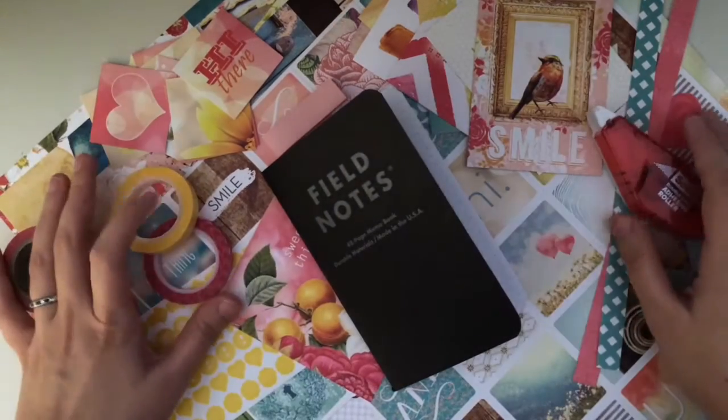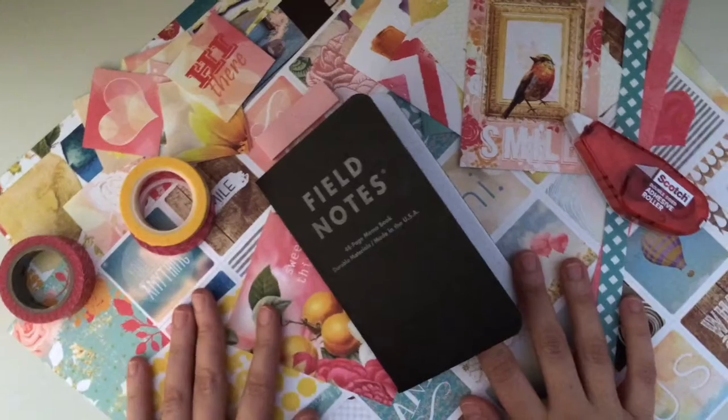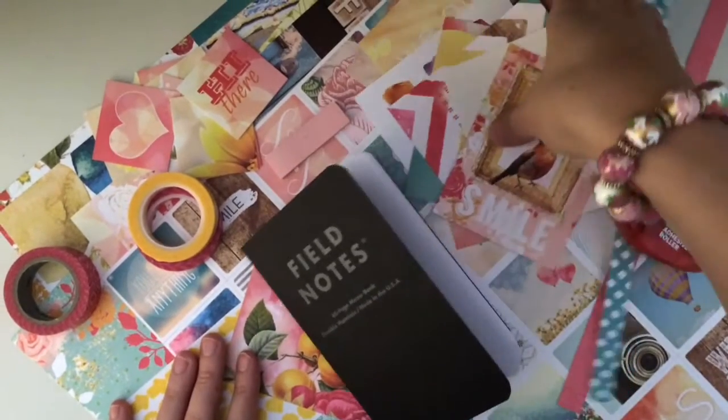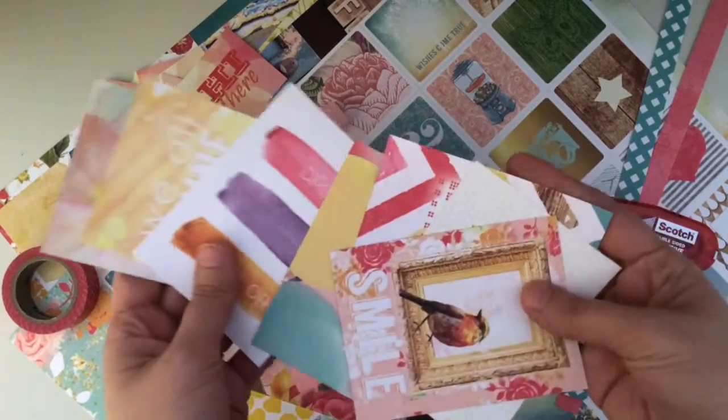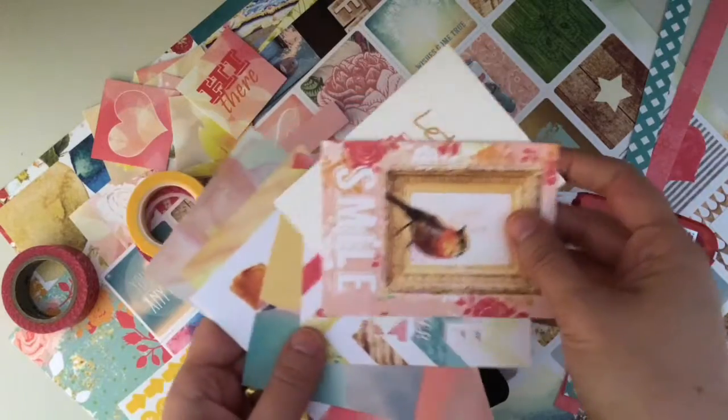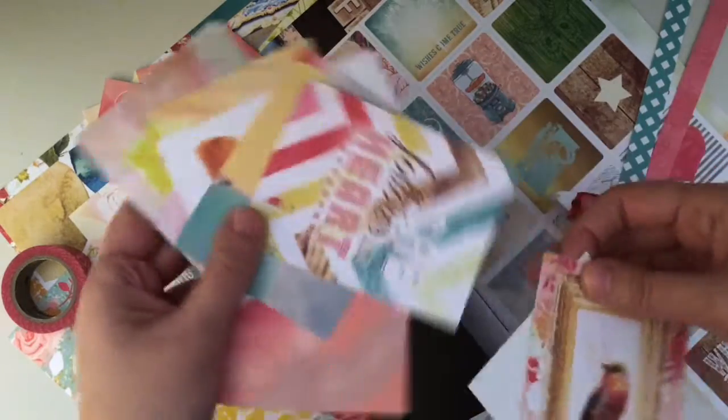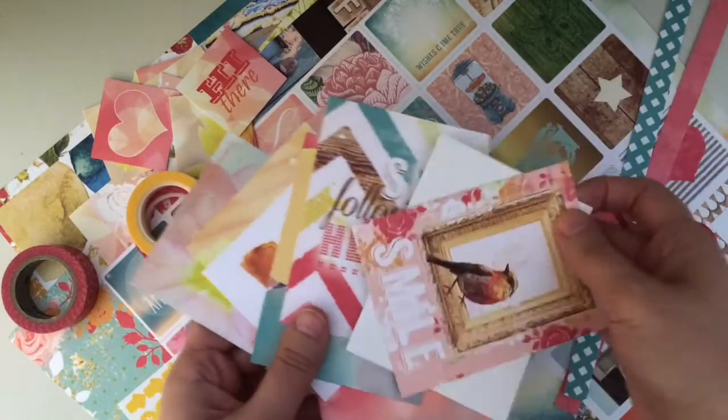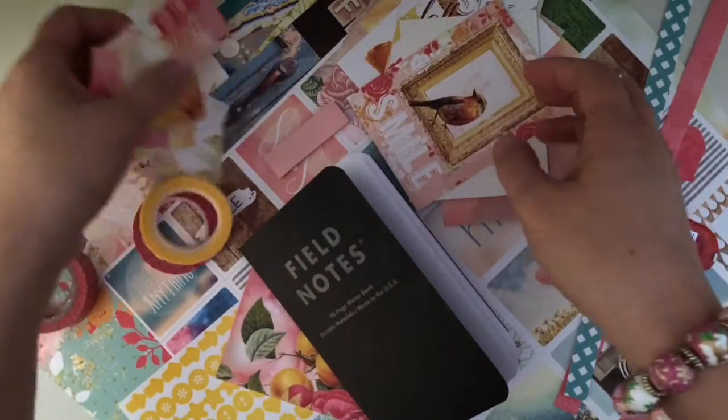We're going to start out with a field notes journal, which is something that I give to my clients because it has a dot grid inside. So you can get that bullet journal feel without having to spend $30 or $40 on one of those expensive brand name bullet journals.